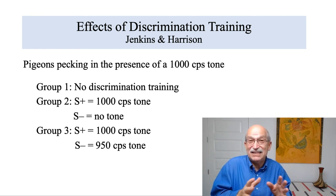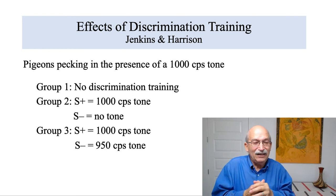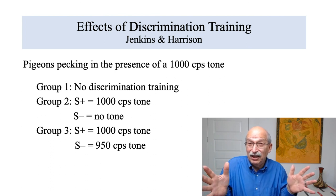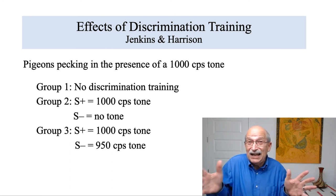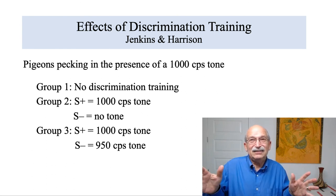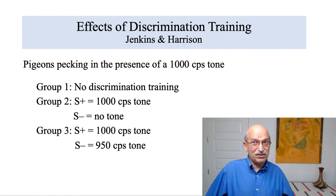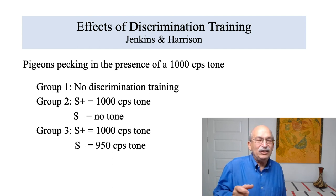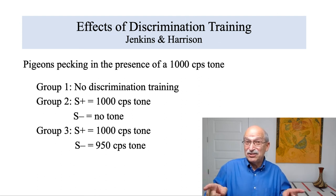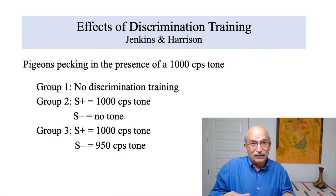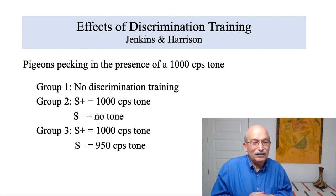Group one did not get discrimination training. They were simply reinforced for pecking in the presence of a 1,000-cycles-per-second tone, which was present in the chamber as part of the background the whole time — pigeons reinforced on a VI schedule, no discrimination training. Group two got discrimination training where responding was reinforced when the 1,000-cycles-per-second tone came on, but periodically the tone was turned off and there was no reinforcement for pecking.